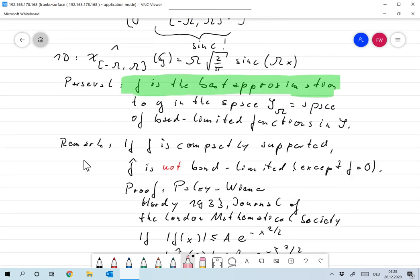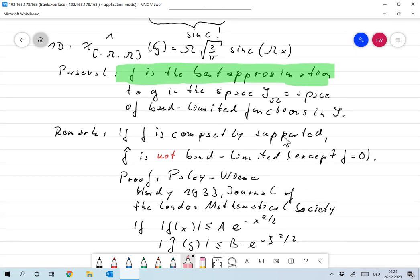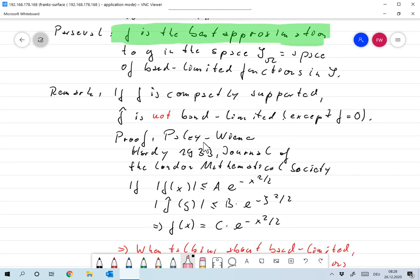Okay, that sounds like a reasonable concept. Unfortunately, it isn't, and the reason is a consequence of Paley-Wiener, which I'm not going to go into detail about. But one consequence of the theorem by Paley-Wiener is that if f is a compactly supported function in S, then f̂, the Fourier transform, is not band-limited, except f is zero.